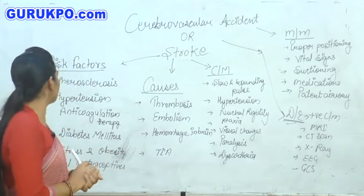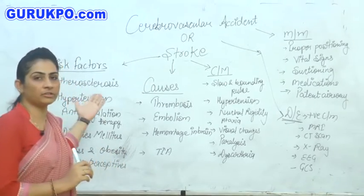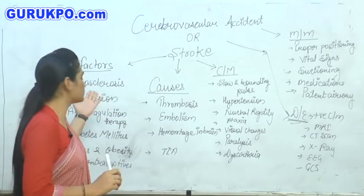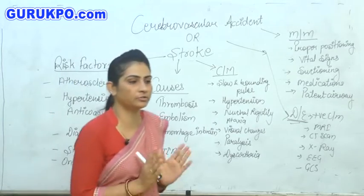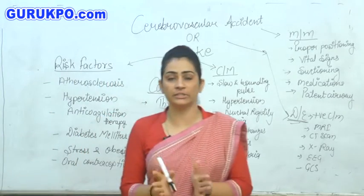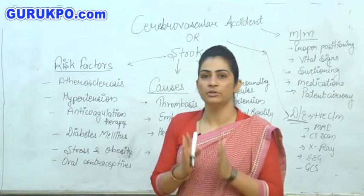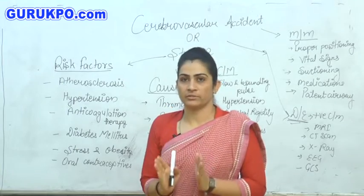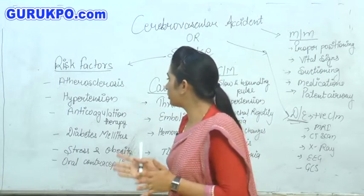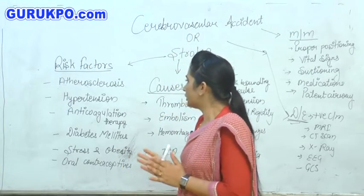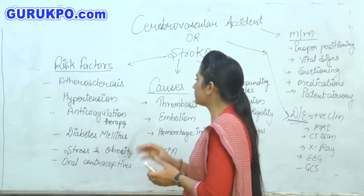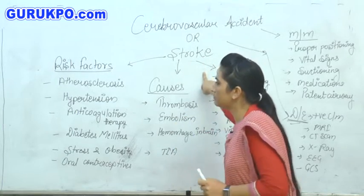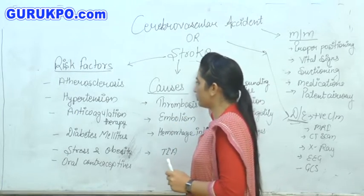First of all, I am going to describe the risk factors of a stroke. First is atherosclerosis. In atherosclerosis, abnormal fat deposition occurs in the blood vessels all over the body. When this fat deposition reaches the brain level, it causes stroke.